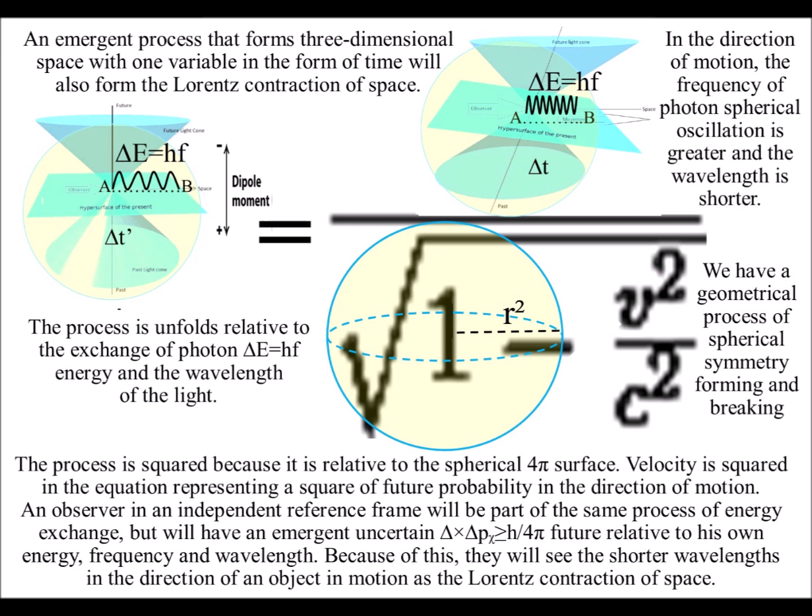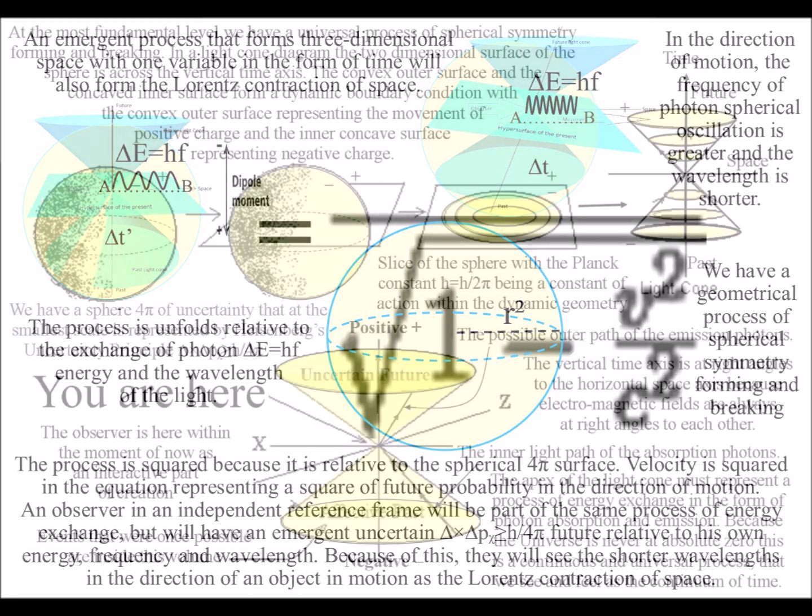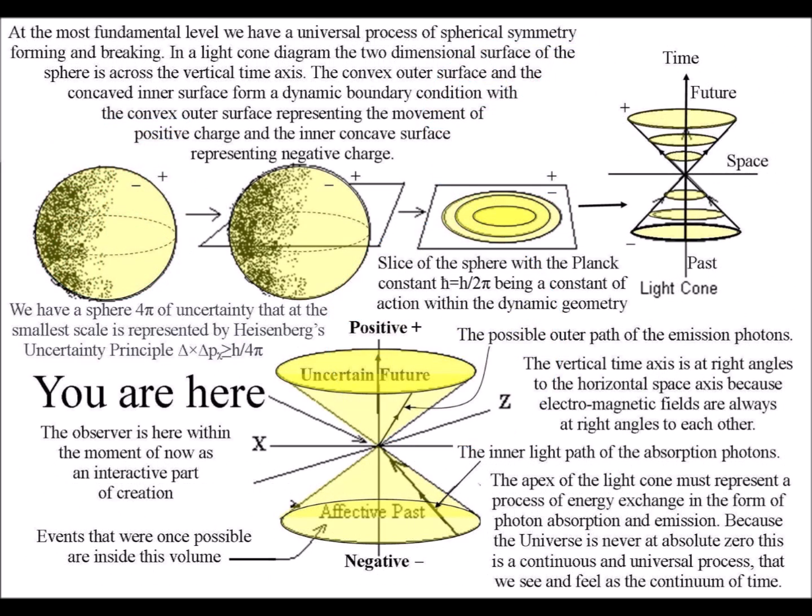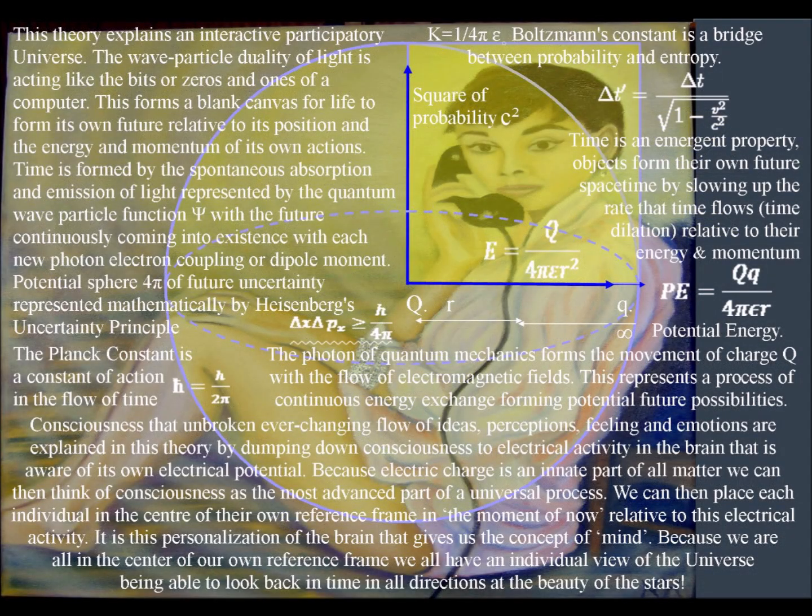In the direction of motion, the frequency of photon spherical oscillations is greater and the wavelength is shorter. The process is relative to the spherical surface, with velocity being squared in the equation, representing a square of future probability in the direction of motion.